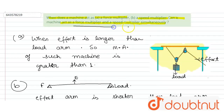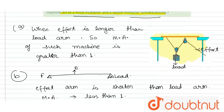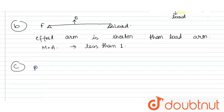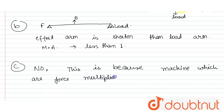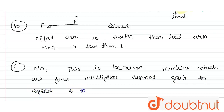For part C: can a machine act as a force multiplier and a speed multiplier simultaneously? The answer is no. This is because machines which are force multipliers cannot gain in speed, and vice versa.